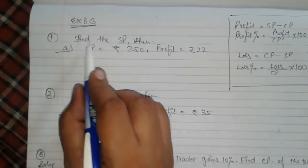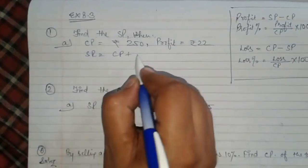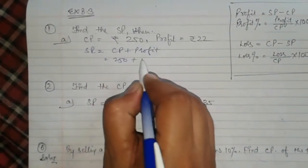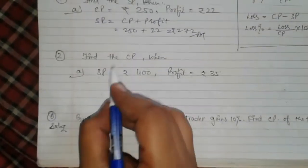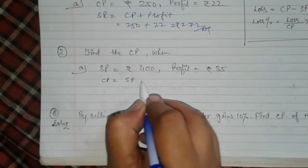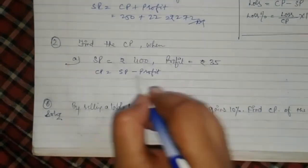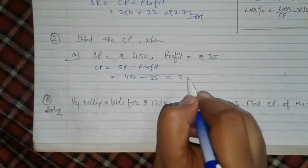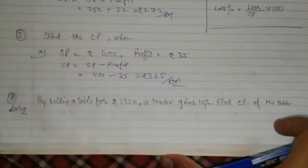Let's start. Exercise 8.3. Find the SP. Formula is SP equal CP plus profit. 250 plus 272 would be the SP. Find CP. CP equal SP minus profit. 400 minus 35, that would be 365.